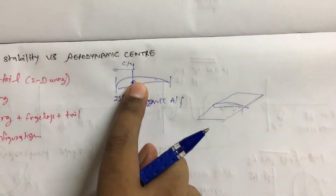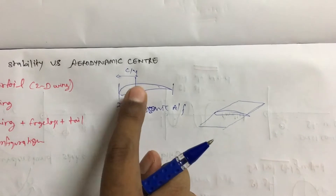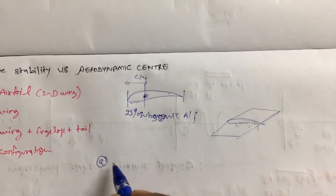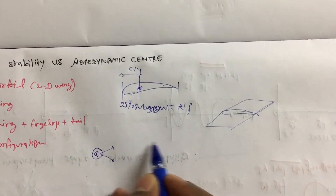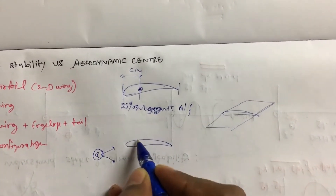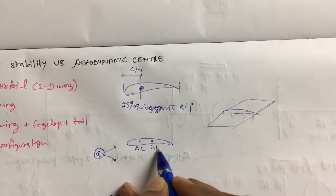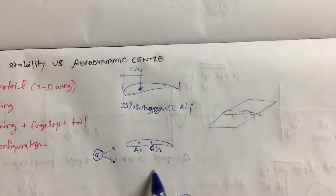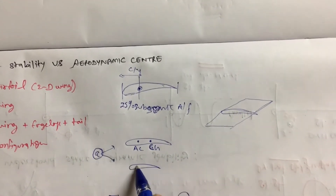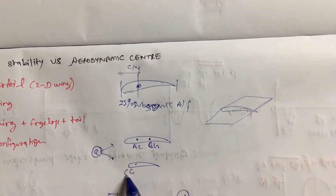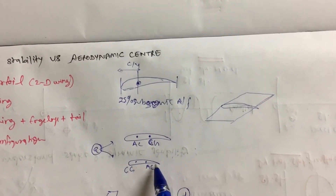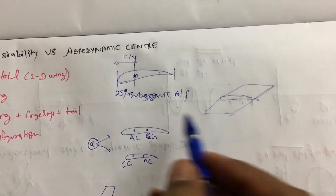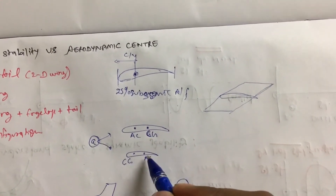Now we have to compare this location with the location of CG. Take two cases. Case one: AC is in front of CG, or AC is ahead of CG. Case two: CG is in front and AC is on the back side. Which configuration is more stable or unstable? This is our main logic to discuss.